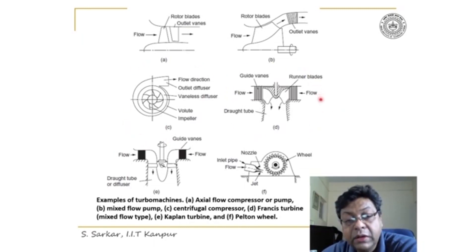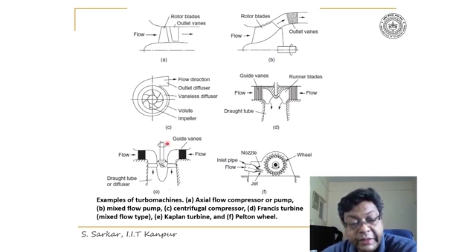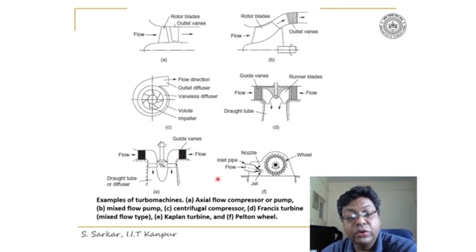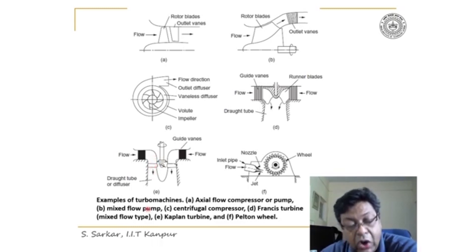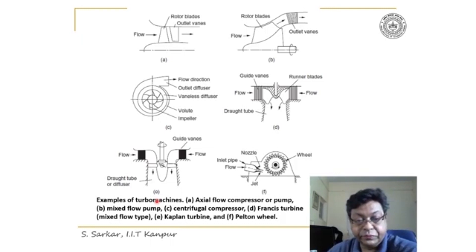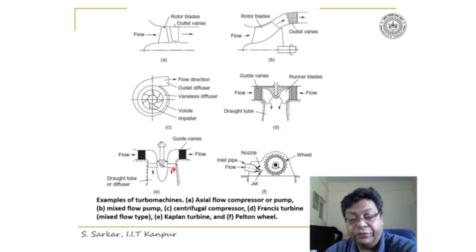Figure D is a Francis turbine — a hydraulic machine with a mixed flow impeller. Figure E is also a hydraulic machine, known as the Kaplan turbine, which is an axial flow impeller. The flow entering and leaving the impeller is parallel to the axis of rotation, and the blades look like a propeller with well-shaped aerofoil structures.